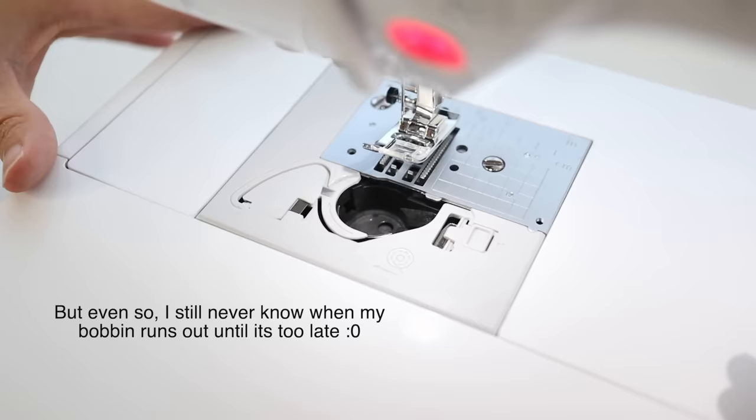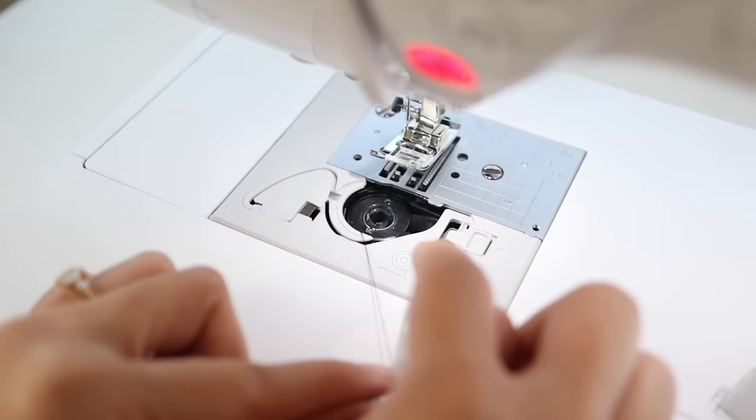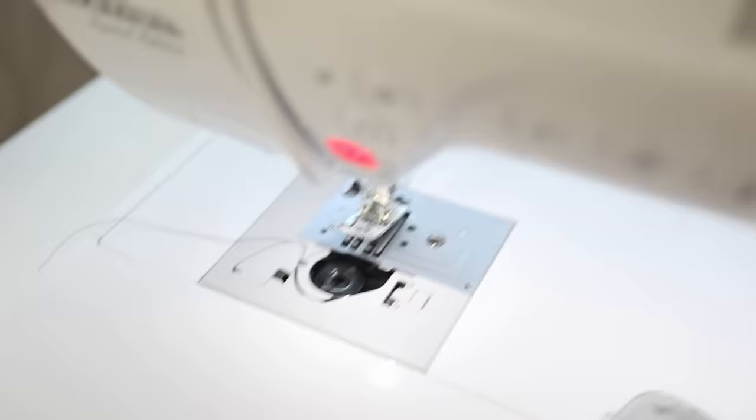My machine has a top bobbin loader with a clear cover so I can see when I run out of thread. Once I place the bobbin inside I pull the thread out a little and go back to thread the top of the machine.